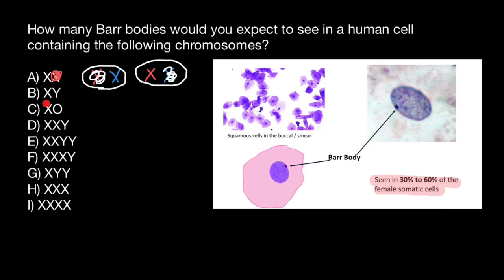The next variant is a female with Turner syndrome, where O stands for the missing X chromosome. Because one X chromosome is missing, all remaining X chromosomes would be active and we are not going to see any Barr bodies. So in variant A we see one Barr body, zero Barr bodies in a normal male, and in a female with Turner syndrome with one missing X chromosome, we also see zero Barr bodies.